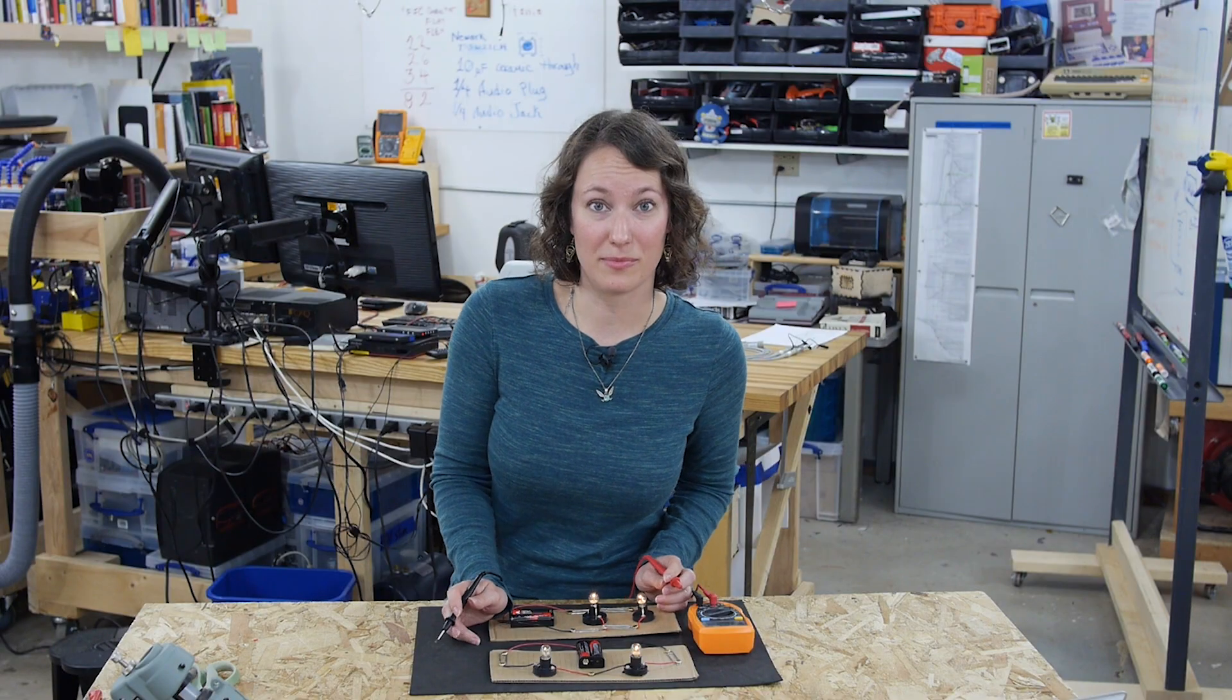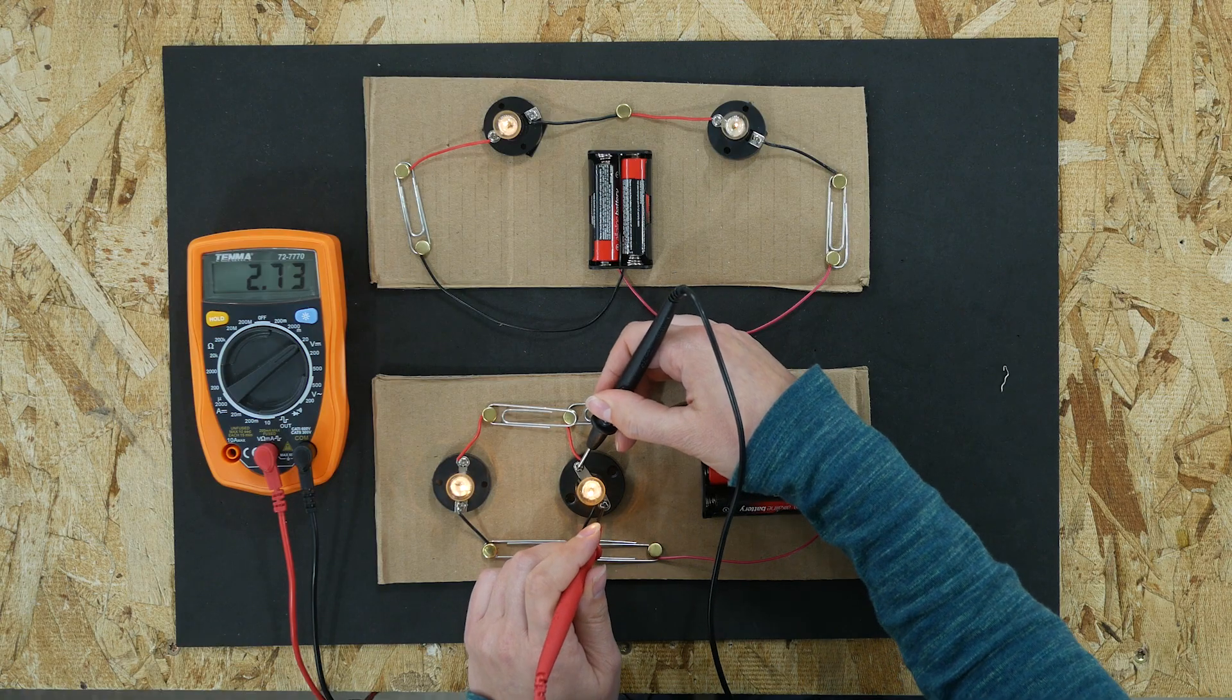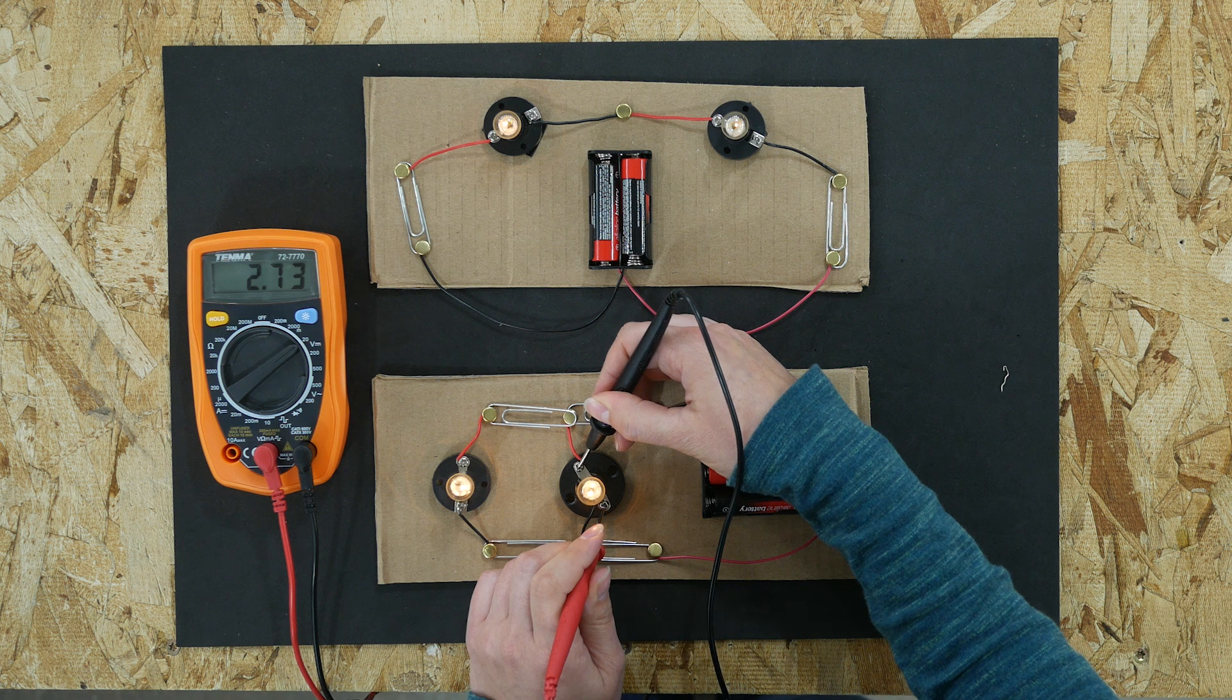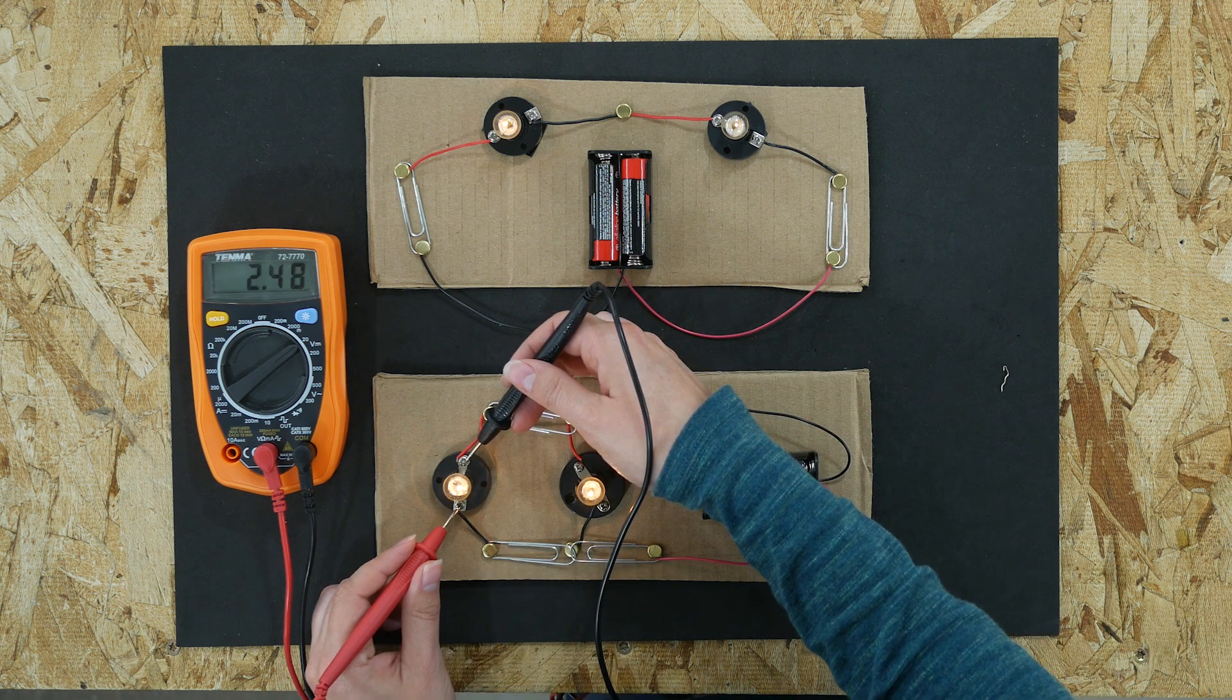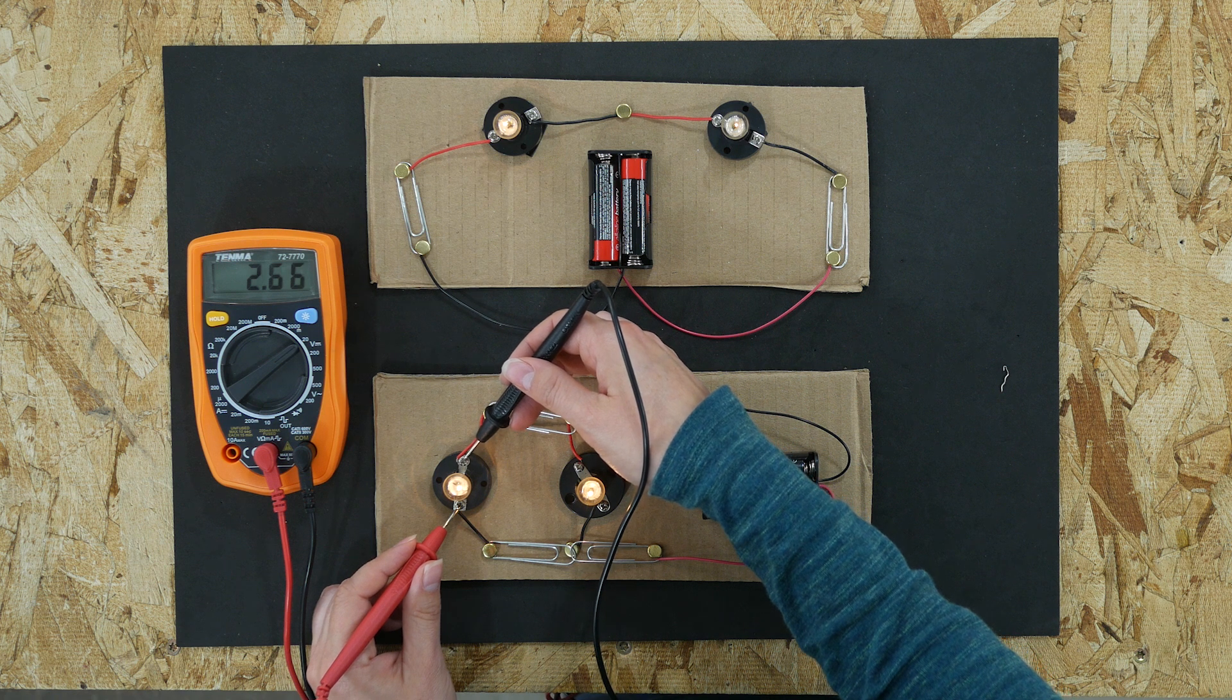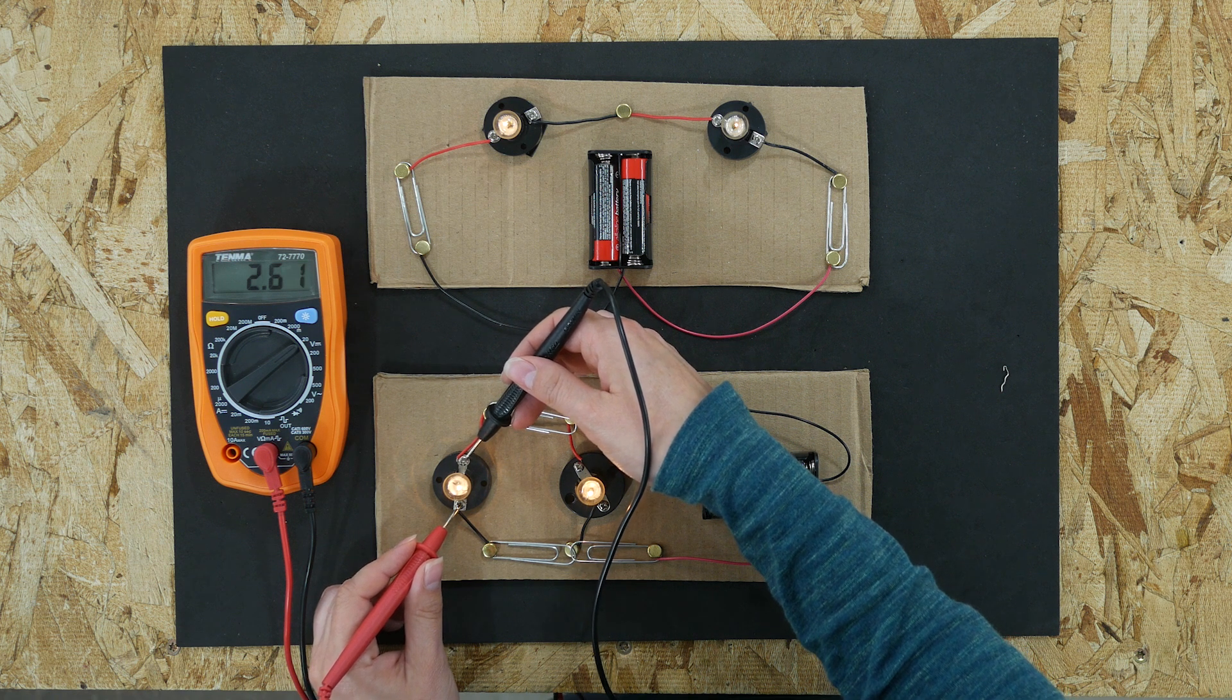Now let's check our light bulbs. In our parallel circuit, the first light bulb has 2.7374 volts going across it. The second light bulb has around 2.6 volts, pretty close to the same as the first one.